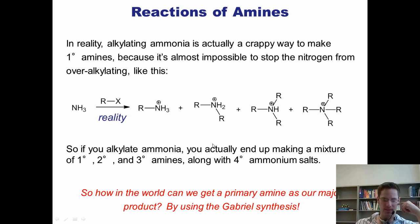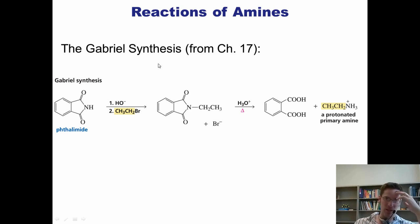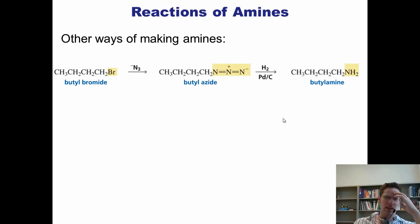By using the Gabriel synthesis. So, this problem can be circumvented using the Gabriel synthesis. As we've talked about back in Chapter 17, if I begin with this compound called phthalimide, I have to use the PHTH sound there, it's kind of fun, phthalimide, and I deprotonate it using hydroxide, the negative charge on the nitrogen can then be alkylated using an alkyl halide to give me this intermediate. If I take this intermediate, I can then hit it with acid and heat, and it will hydrolyze off the amine and give me a free protonated primary amine as my exclusive product together with this dicarboxylic acid. That protonated amine can, of course, be neutralized to give me primary amine as my exclusive product.